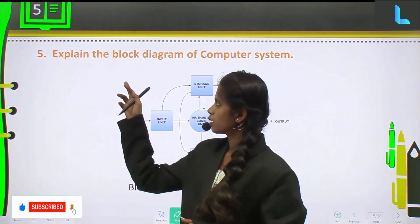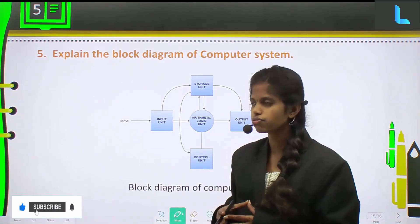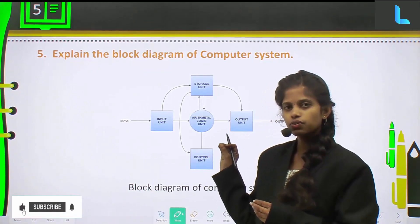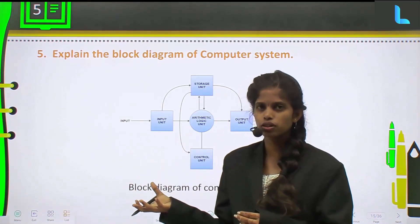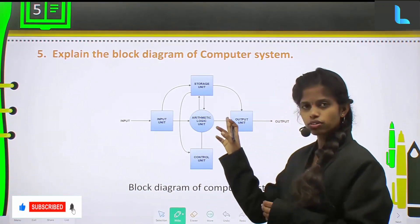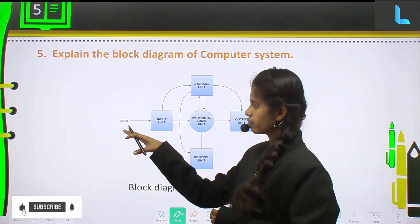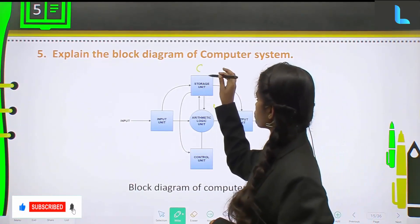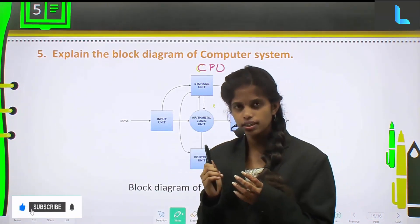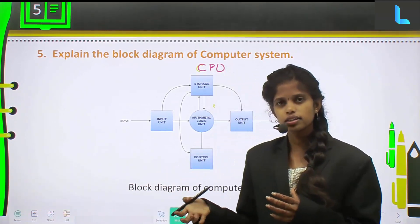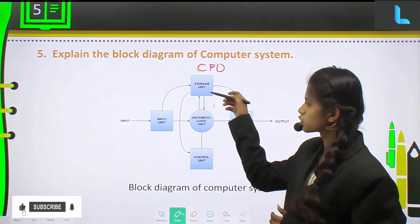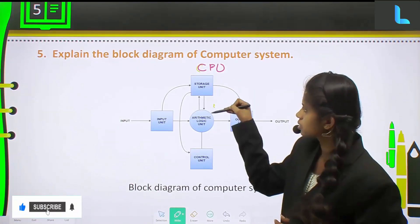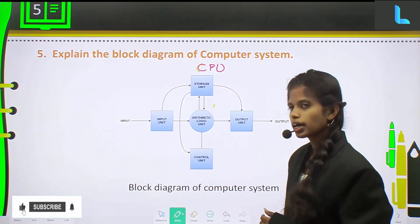Next comes question number 5: the block diagram of your computer system. First you should write the block diagram, then list out each and every component used in the computer system with a brief explanation about each component. Any computer system will have an input device and an output device, and between input and output you will have the CPU, which will perform the actions and generate the required output. Inside the CPU you have the storage unit, arithmetic logic unit, and control unit — these are the three parts of the CPU.